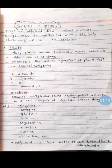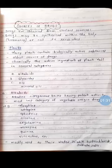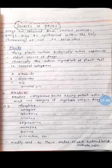Many plants contain biologically active substances. Plant source is the oldest source of drugs. Chemically, the active ingredients of plants fall into several categories. Plant sources are classified into alkaloids, glycosides, and oils. Alkaloids are alkaline nitrogenous bases having potent activity — they are the most important category of vegetable origin drugs.